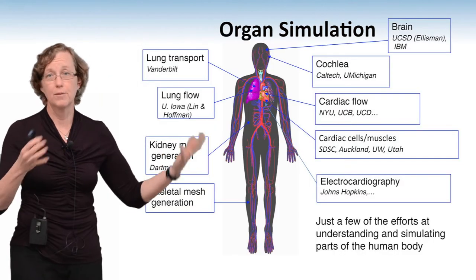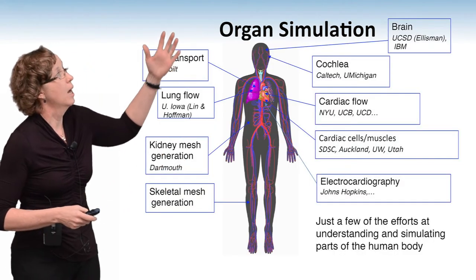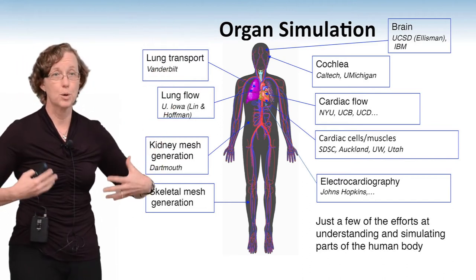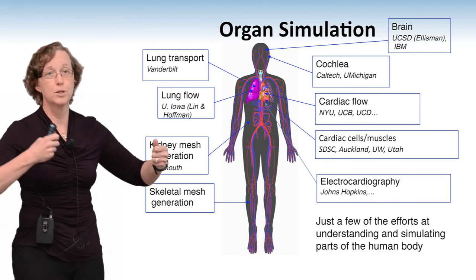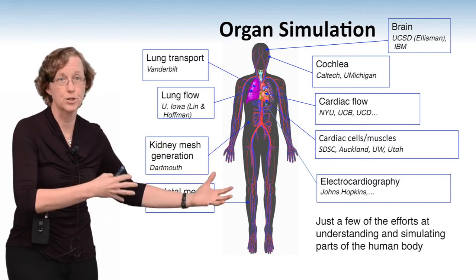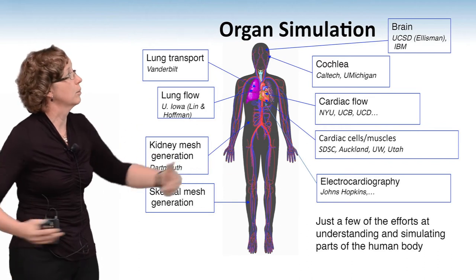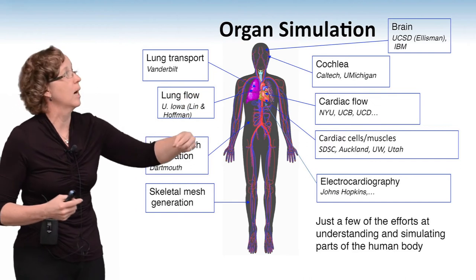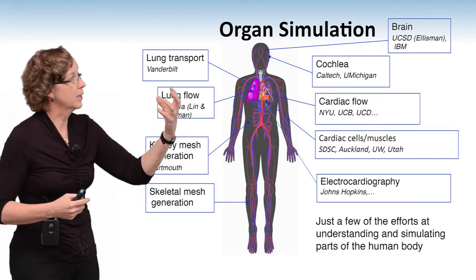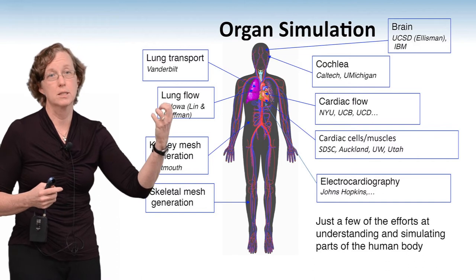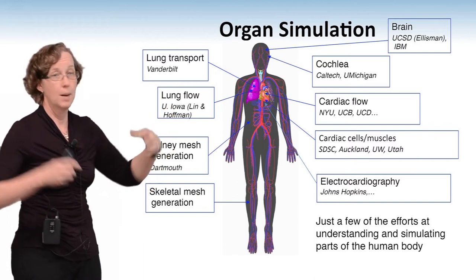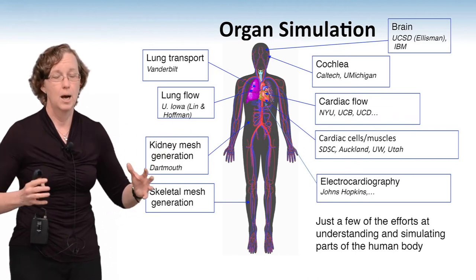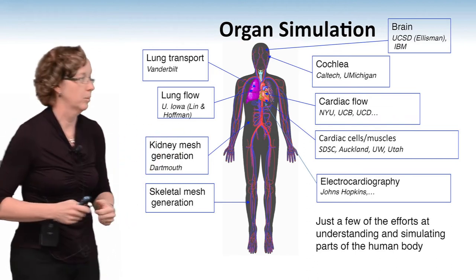Hearts are just one part of the body. A number of researchers have looked at other parts — computer simulations of the lungs, for example — and what you'd ideally do is tie the heart and lungs together to understand how oxygen from the lungs enters the blood system and how that affects the kidneys. The heart itself is very complicated: it has electrocardiography which causes the muscles to contract, and there is the blood flow where the blood pushes on the walls of the heart and the walls push back on the blood.